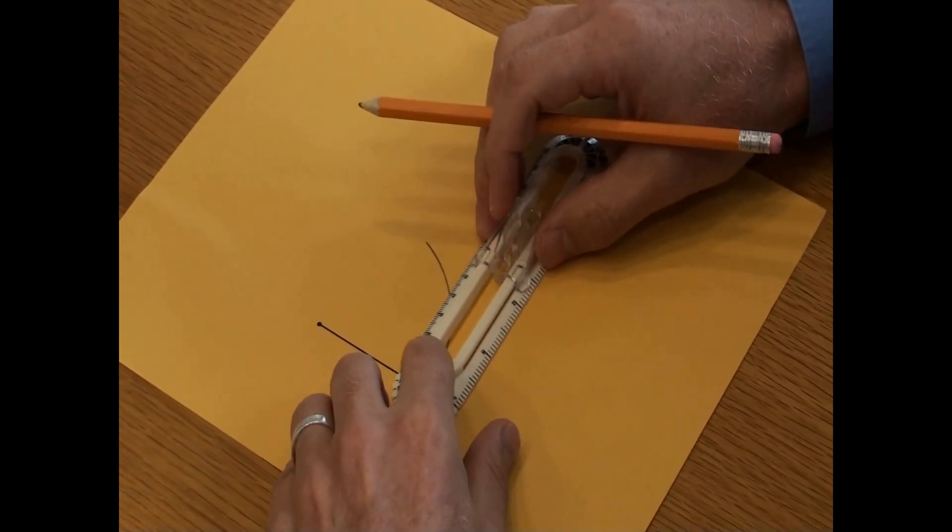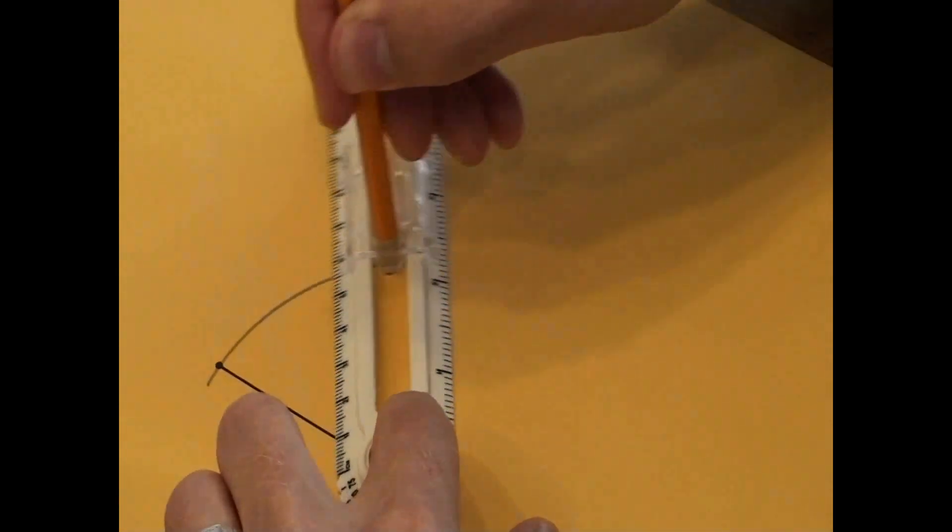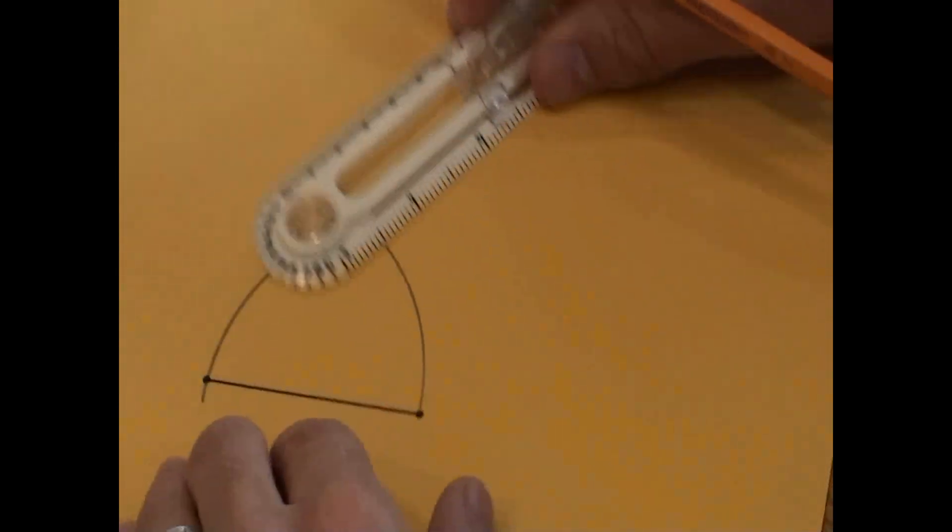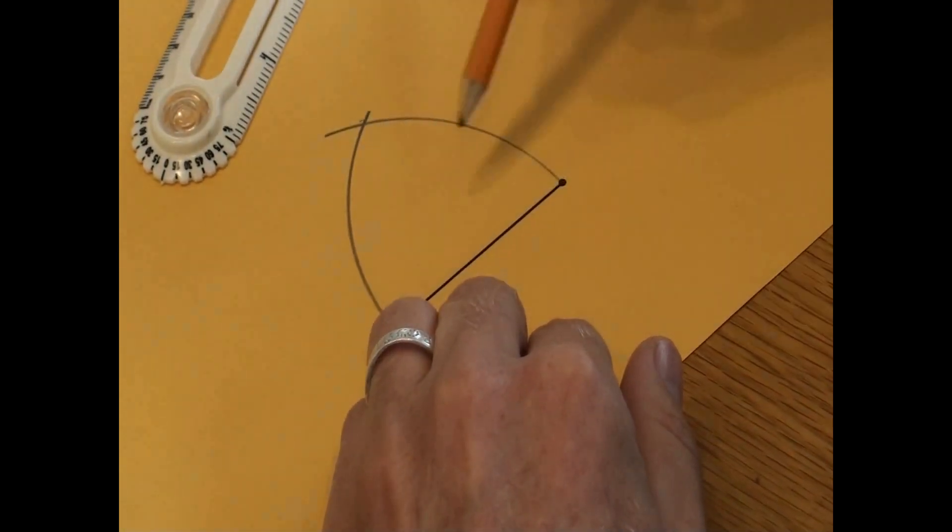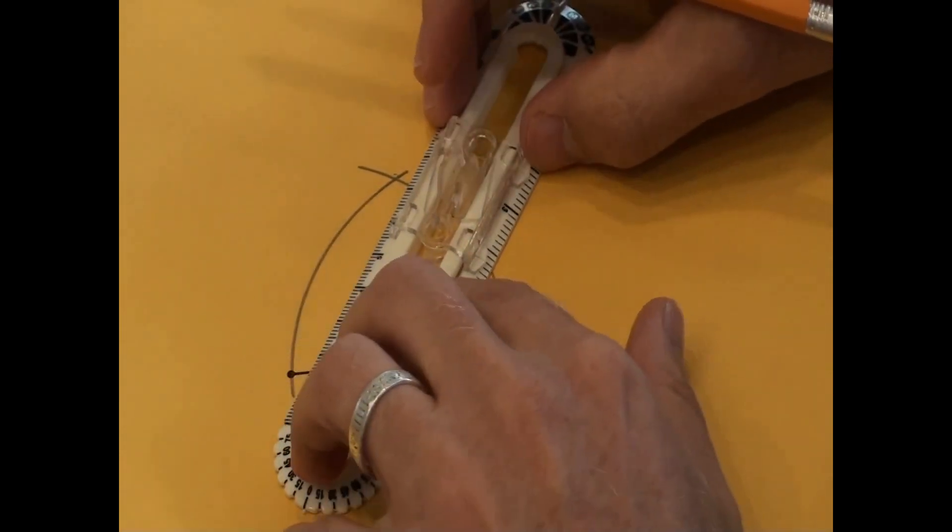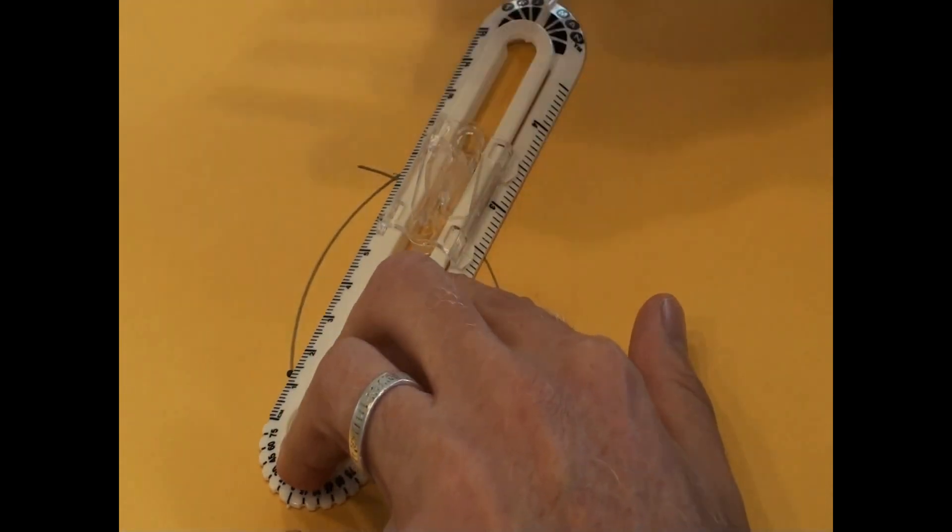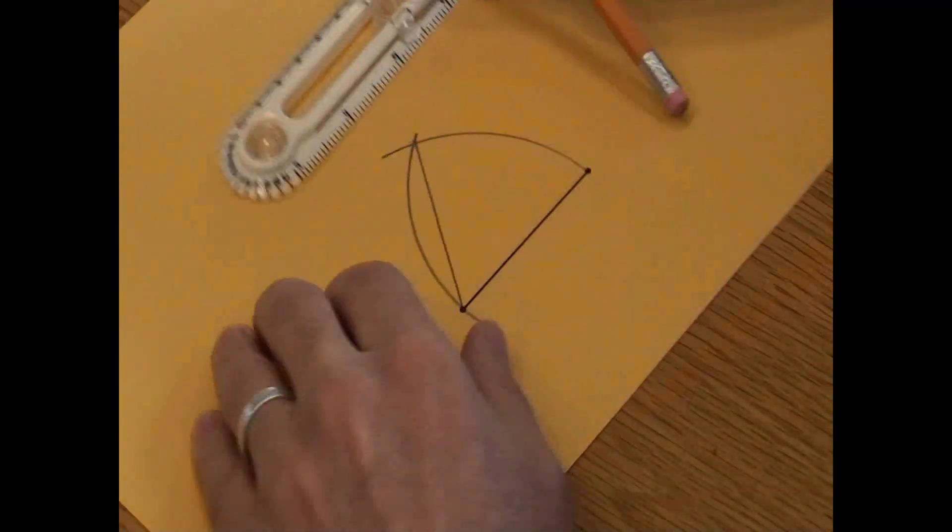Now strike another arc from the other endpoint. It is important to remember not to change the compass's slide position. The point of intersection of the two arcs is equidistant from both this endpoint and this endpoint. By connecting this new point to both endpoints, I've created an equilateral triangle with all three sides the same length.